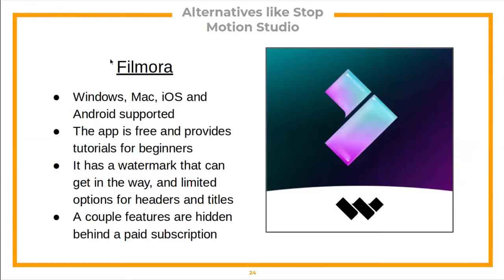The next alternative is Filmora, supported on Windows, Mac, iOS, and Android. It's free and provides tutorials for beginners. However, it has a watermark that can get in the way, limited options for headers and titles when editing, and a couple of features are hidden behind a paid subscription, similar to Stop Motion Studio Pro.